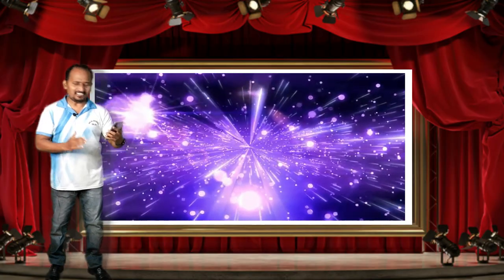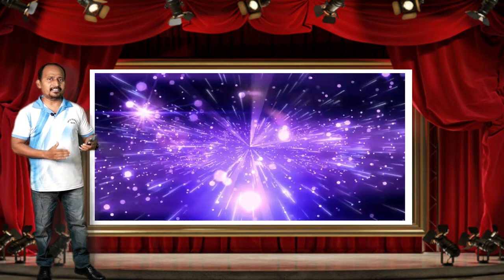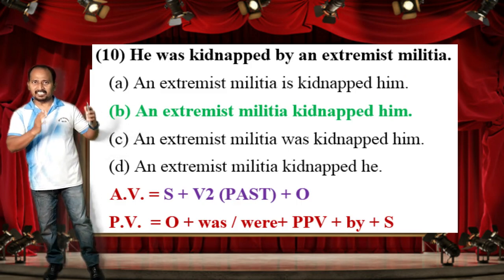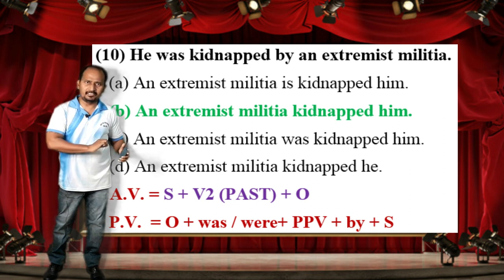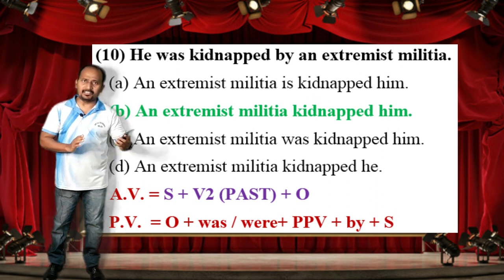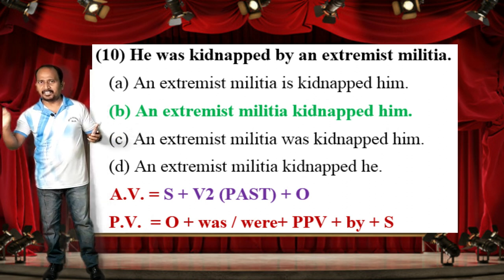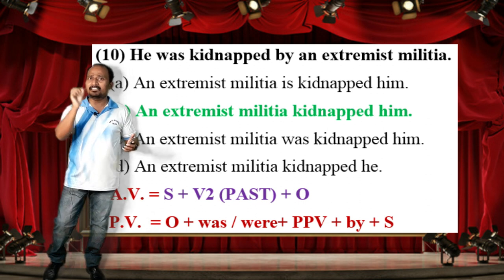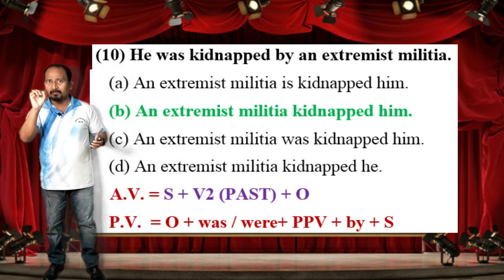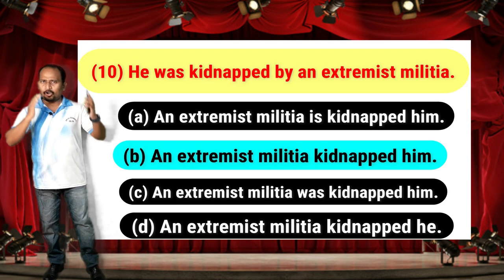The correct answer is option B: 'An extremist militia kidnapped him.' The passive voice sentence is in simple past tense, so you have to change it to active voice in simple past tense. The formula for simple past tense active voice is: Subject + V2 (past form of verb) + Object. That is why option B is correct.